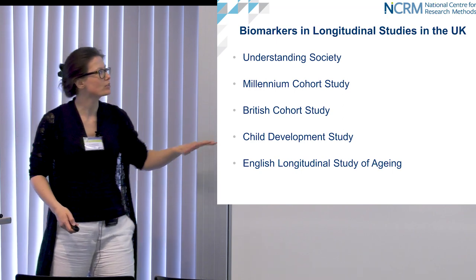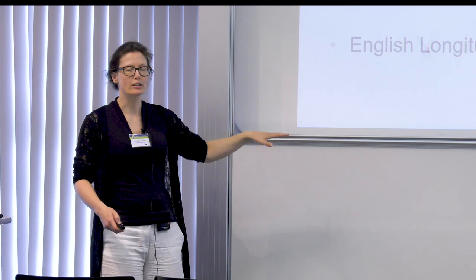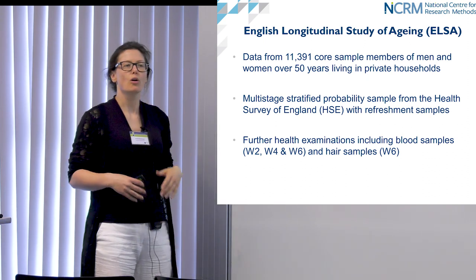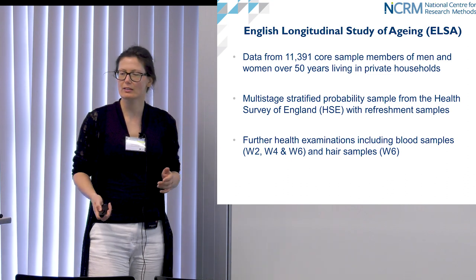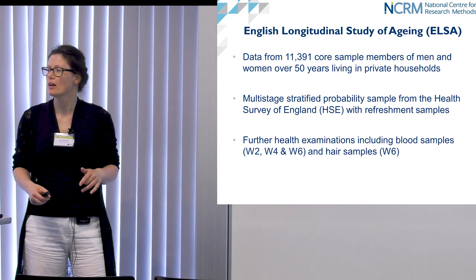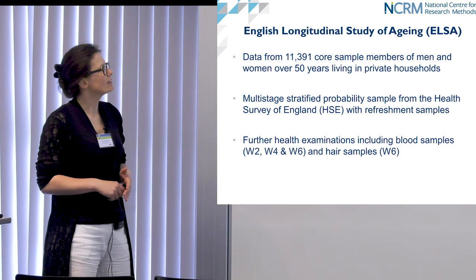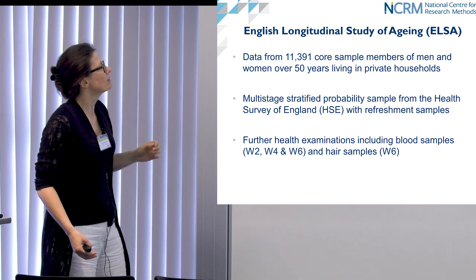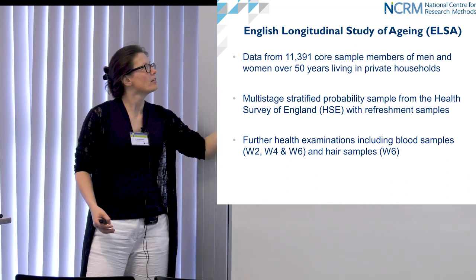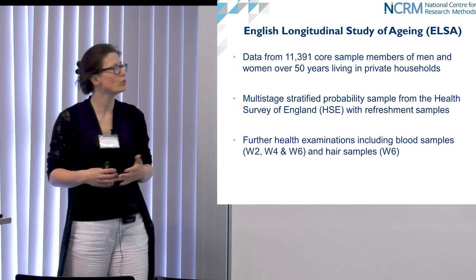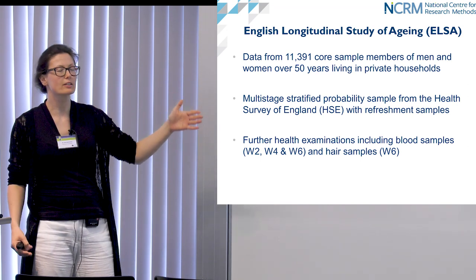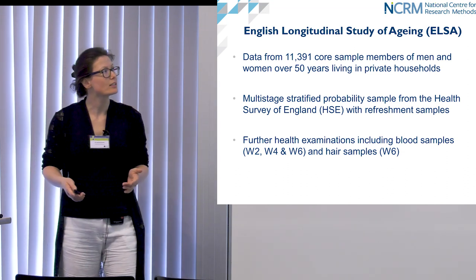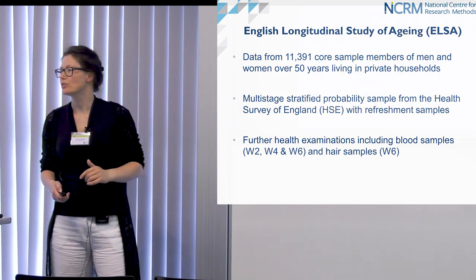For our studies we're using the English Longitudinal Study of Aging, or ELSA, which in its first wave had more than 11,000 men and women over the age of 50. This data comes originally as a sample from the Health Survey of England. In waves 2, 4, and 6 there have been health examinations including a nurse visit and blood samples, and additionally in wave 6 we also have hair samples. This biomarker data is available every two years for the same individuals.